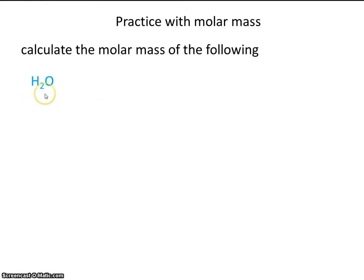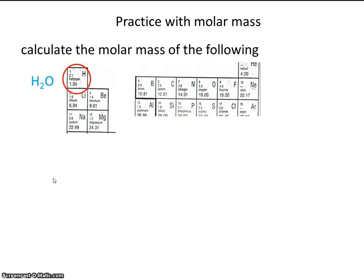Let's practice another one. Calculate the molar mass of water. Now water, of course, has two elements. Hydrogen and oxygen. But there are three atoms. There's two atoms of hydrogen and one atom of oxygen. So this is where counting atoms is extremely important. So find both hydrogen and oxygen on the periodic table.